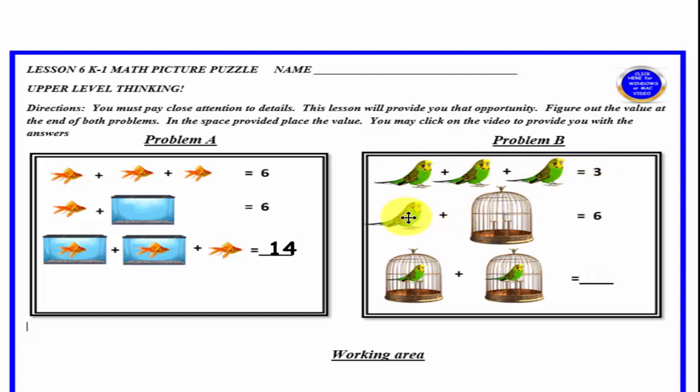Here we have the parakeet again, one plus the birdcage, and it equals six. If this equals six, then the birdcage must equal five. Why is that? Well, we know this is one. Six minus one is five.